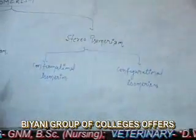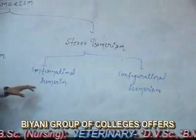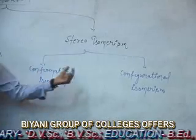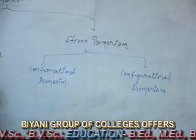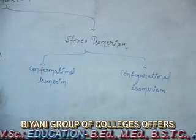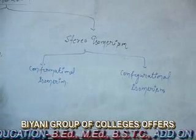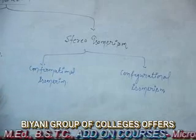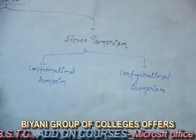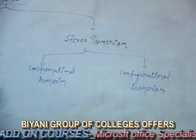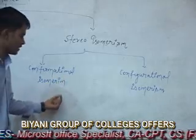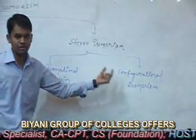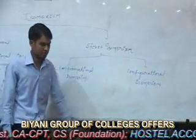Stereoisomers are basically classified in two categories: conformational isomers and configurational isomers. The conformational and configurational isomers are differentiated on the basis of energy that is required to convert one isomer to another isomer.